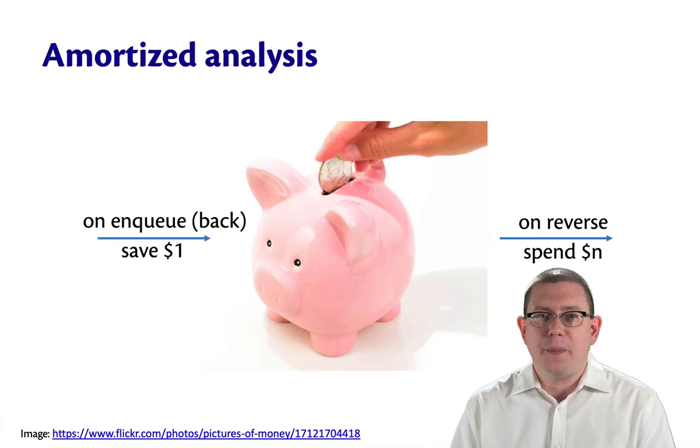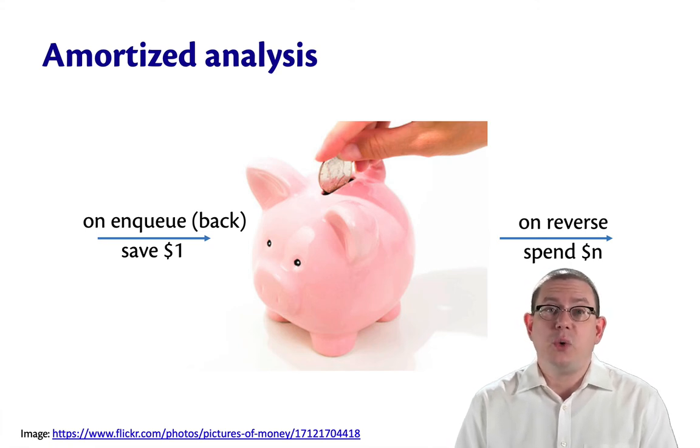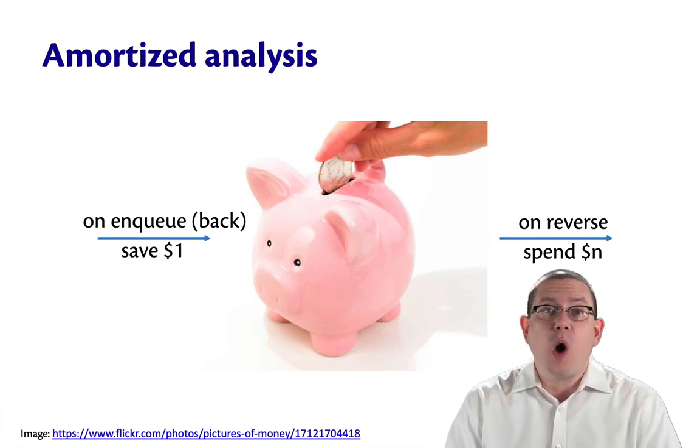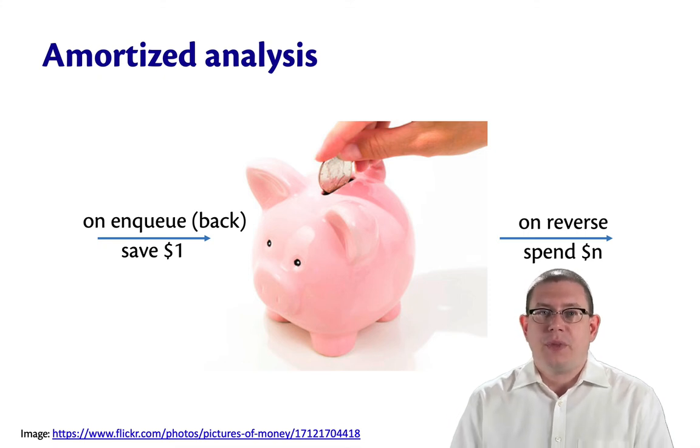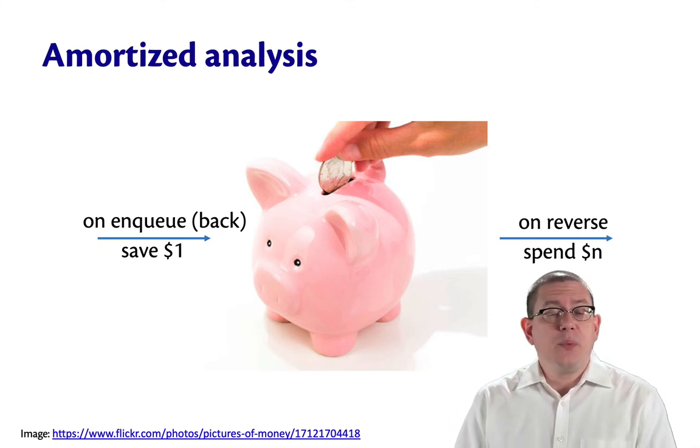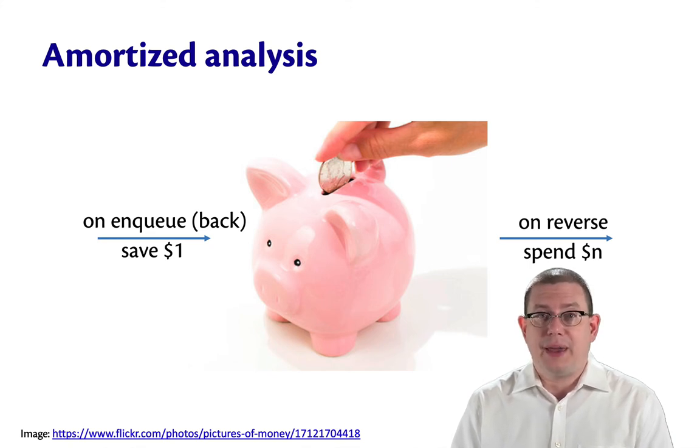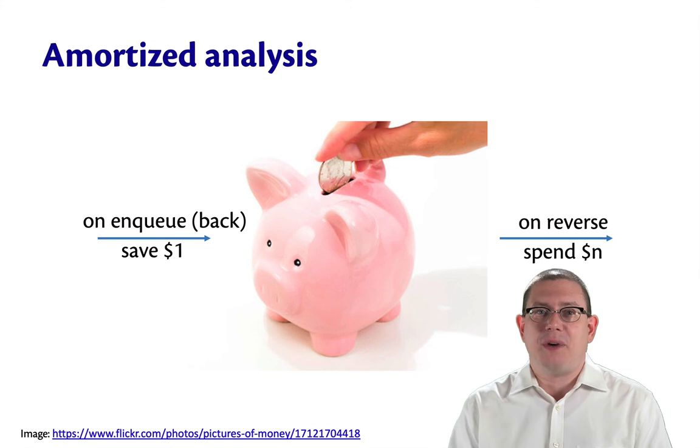Let's think back to our piggy bank. Suppose that every time we enqueue onto the back, we save $1. Then, whenever we get to the point that we actually need to reverse, we spend n dollars out of that piggy bank, crack it open to pay for the expensive operation.